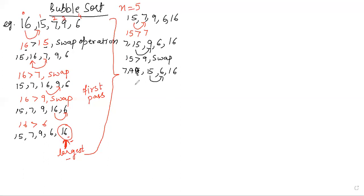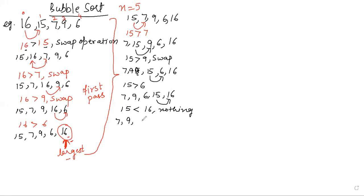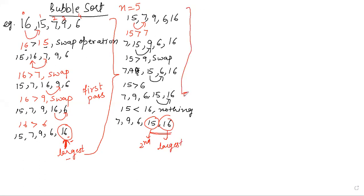The pointer moves forward. We compare 15 with 6 — 15 is greater, so the array becomes 7, 9, 6, 15, and 16. The next comparison is between 15 and 16. Since 15 is smaller than 16, no swap is needed. After this, by the end of my second pass, two elements are at their required positions: 15 is the second largest element and 16 is the largest.